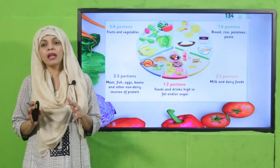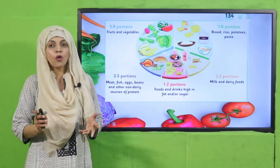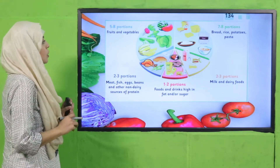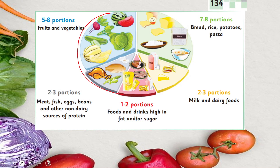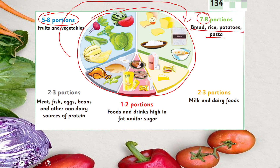Now it's time for reading. Quickly open page number 134 in your GK3 books. Let's quickly look at this balanced diet chart. Here is your plate. Now which portions should your plate be made of? Fruits and vegetables: 5 to 8 portions. Then bread, rice, potato and pasta: 7 to 8 portions. So if you look at your largest portions, those are carbohydrates and fruits and vegetables.